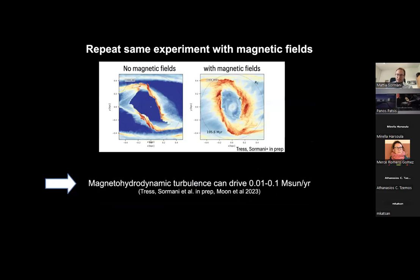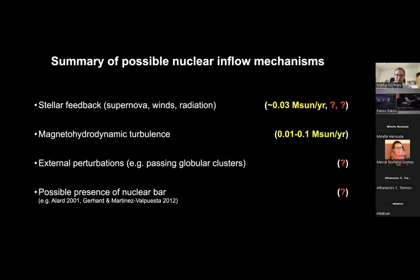Repeating the experiment with magnetic fields instead of star formation gives a similar result: with magnetic fields, the inside of the ring fills with an accretion rate of about 0.01–0.1 solar masses per year. So there are several possible inflow mechanisms and we have estimates for two of them, but we don't know what happens when stellar feedback and MHD turbulence act together, nor the effects of stellar winds, ionizing radiation, external perturbations from passing globular clusters, or a possible secondary bar in the Milky Way.